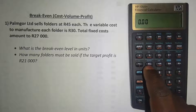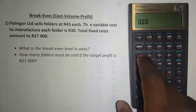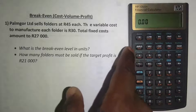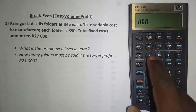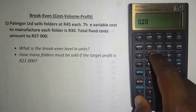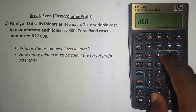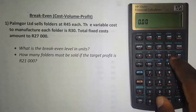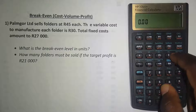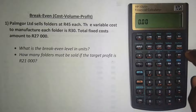You can see here in blue, we have all the elements we need. On top here is written 'units'. Here is written 'SP' on top of the button, which stands for selling price. We have 'VC' on top of the button, which stands for variable cost. We have 'FC', which stands for fixed cost, and we have 'profit'.